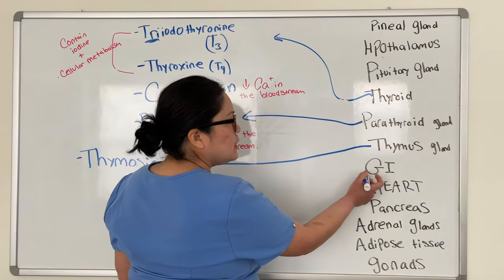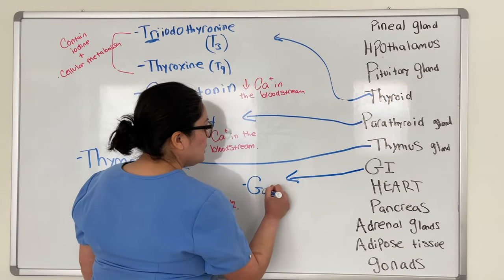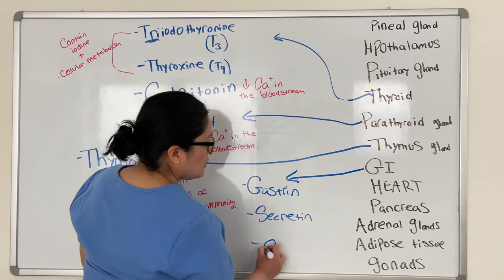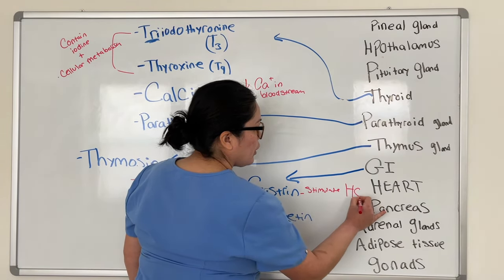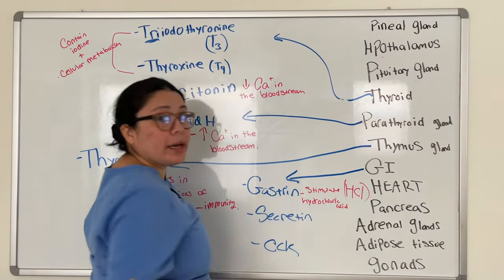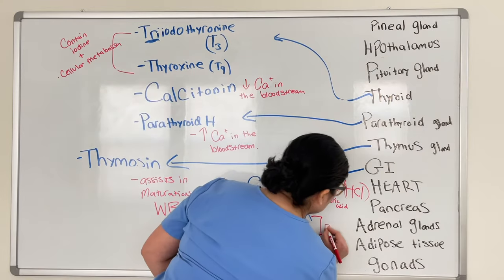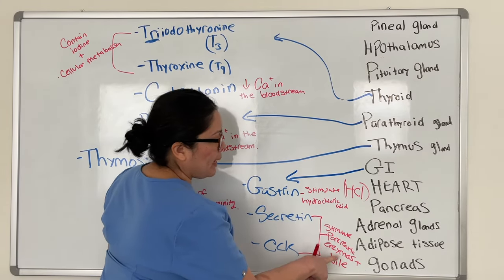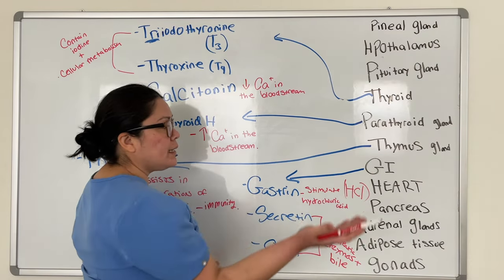The GI system secretes three things: gastrin, secretin, and CCK. Gastrin stimulates hydrochloric acid (HCl). Secretin and CCK stimulate pancreatic enzymes and bile. All three of these basically help with digestion, and they're found in the GI system.